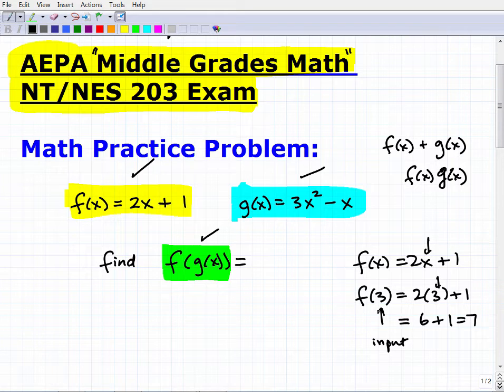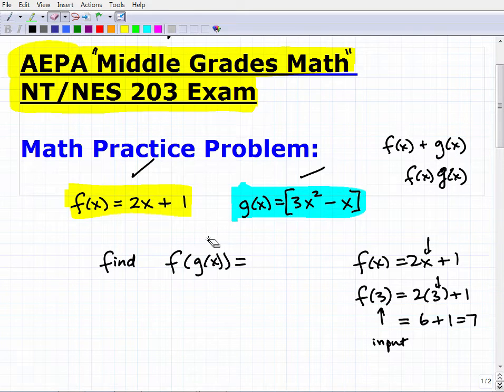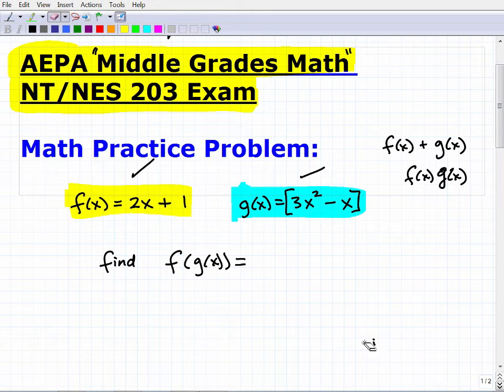Here my input is a particular value—I'm plugging in and wherever I see an x, I replace this input value and simplify. But in this particular problem, a composite function, my input is another function. I'm plugging in the g(x) function, so I'm actually plugging all this stuff in wherever I see x over here. Hopefully this makes sense—it's a quick video, not meant to be a full lesson, but hopefully this jogs your memory.